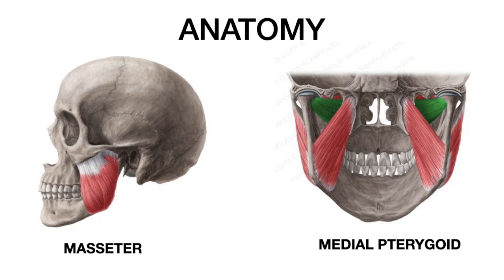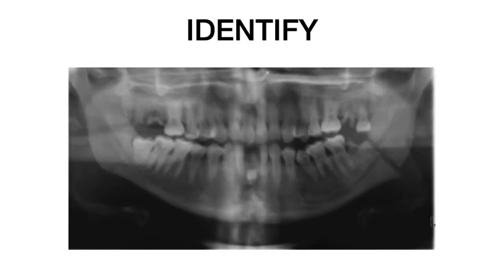The muscles involved are the masseter and the medial pterygoid, which pull the mandible upward, compared to the suprahyoid muscles, which pull the mandible downwards and result in displacement of the fragments. Let's now try to solve a few examples.